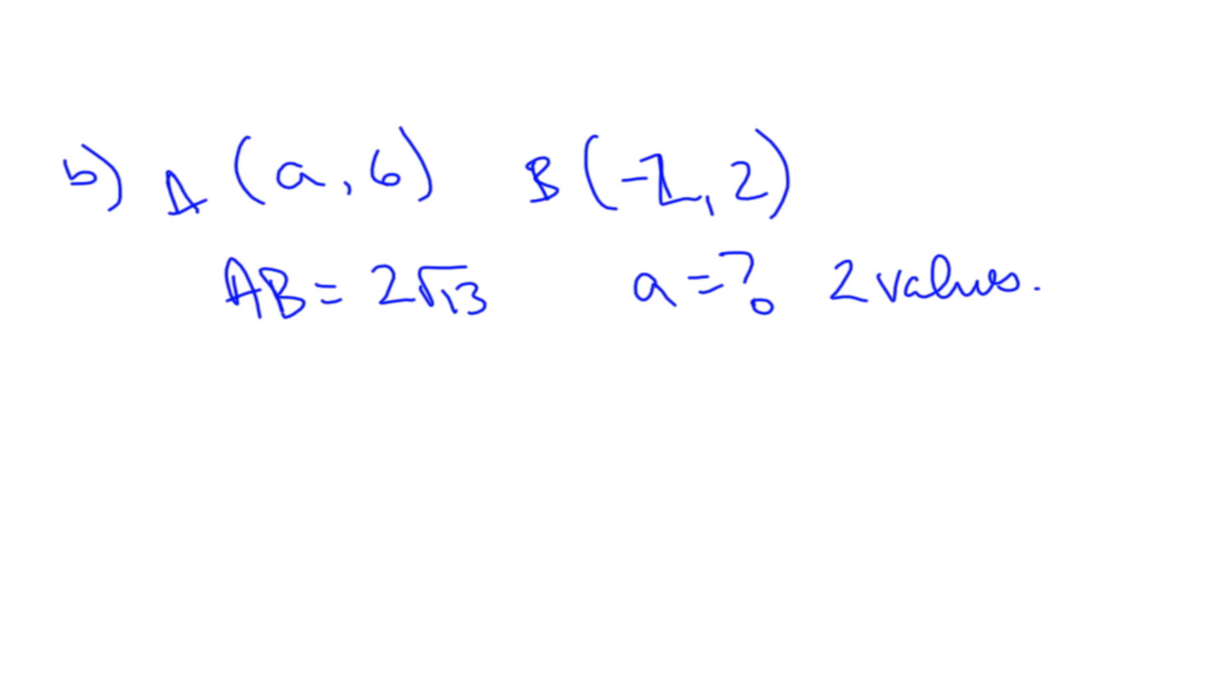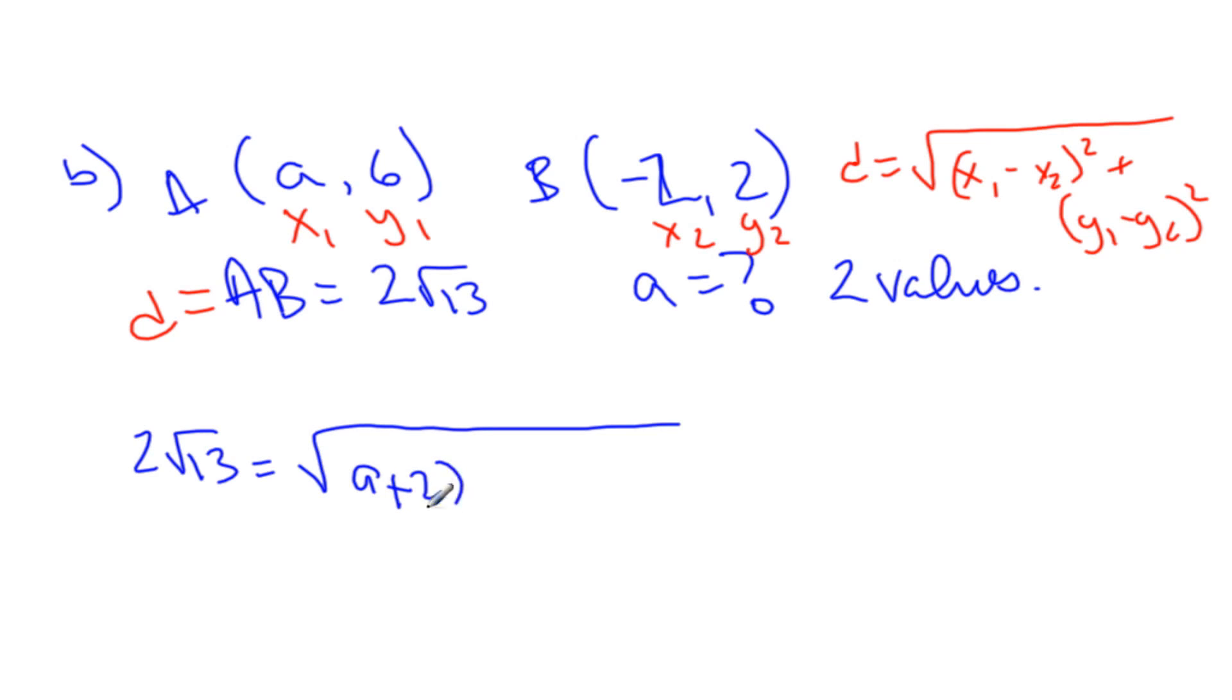Okay. Well, let's put all this information in. It's easy if we just, we have our formula. We label up our x1 and y1, x2, y2. And we plug it into our formula. Which we know is this thing here. The difference in the x's squared, plus the difference in the y's squared. Okay. We know that AB is D. That is our D value. So I can say 2 square root 13 is equal to A minus negative 2, which is plus 2, squared. I'm going to add, 6 minus 2 all squared.